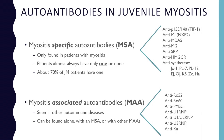The second type is called a myositis-associated autoantibody. These are autoantibodies that are seen in myositis, but they're also seen in other autoimmune diseases. They can be found alone in a single patient, can coexist with a myositis-specific autoantibody, or coexist with other myositis-associated autoantibodies. The list on the right is very long for both of these groups, and I'm going to go over them individually — especially the myositis-specific autoantibodies.